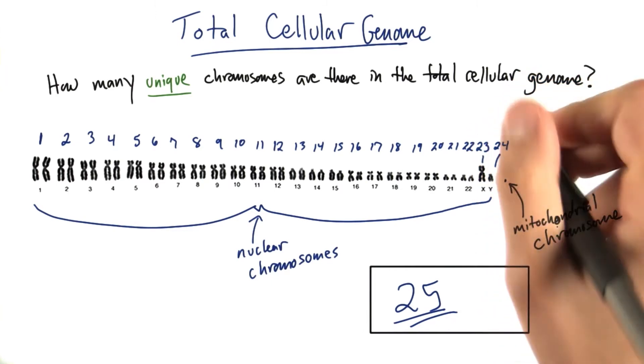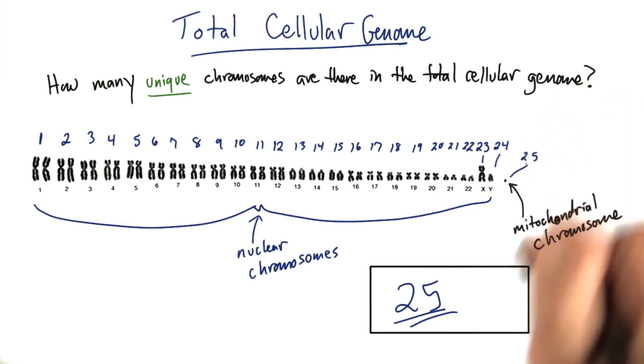And then if we include the mitochondrial chromosome, that's 25 unique chromosomes.